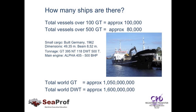Now that we understand the difference between GT and DWT, let's think about how many ships there are in the world. For total vessels over 100 GT, there are approximately 100,000. For vessels over 500 GT, there are approximately 80,000. Take a look at the small cargo vessel in the photograph — she has a GT of 395, so she's included in the 100 GT count but excluded from the 500 GT count. Total world GT, for vessels in excess of 100 GT, is approximately 1 billion. Total world DWT is approximately 1.6 billion. The major problem we have in the world today is simply too much tonnage capacity.